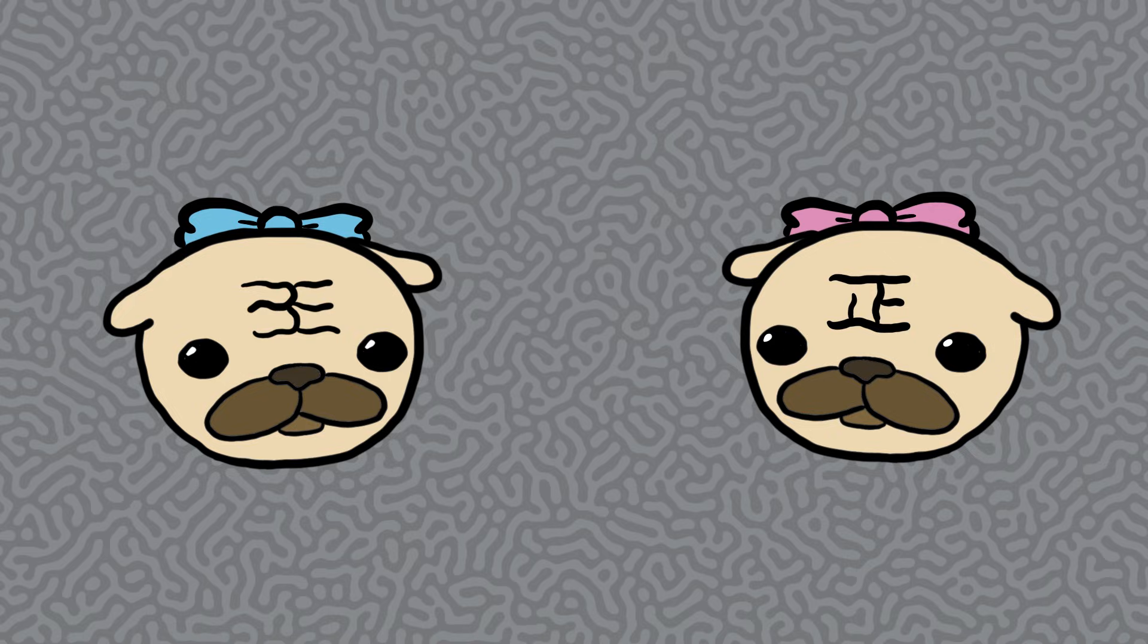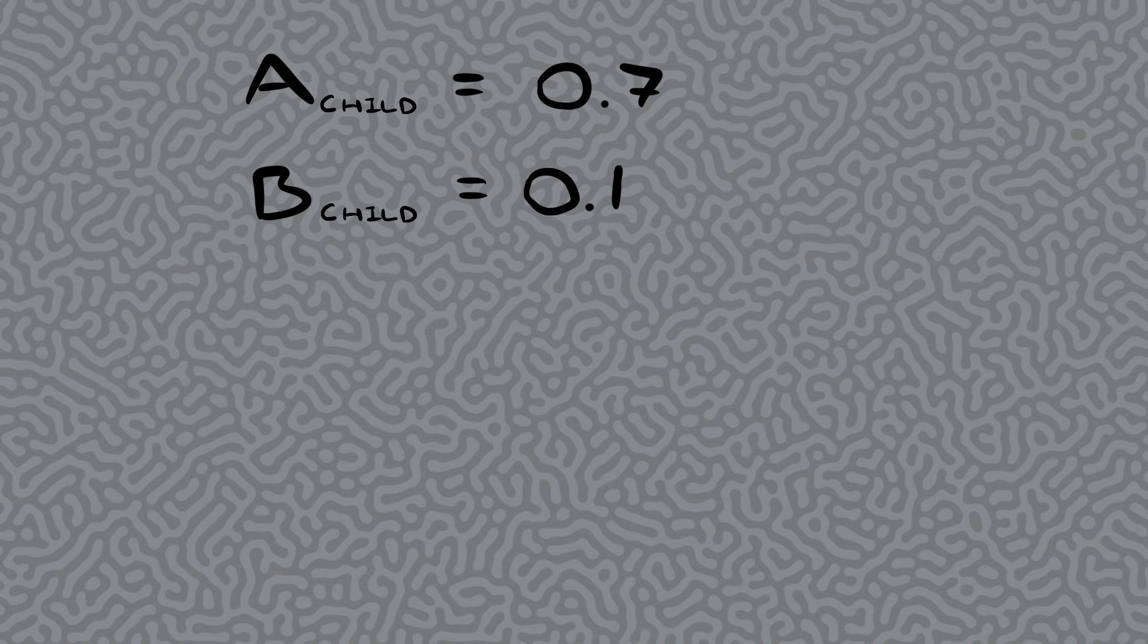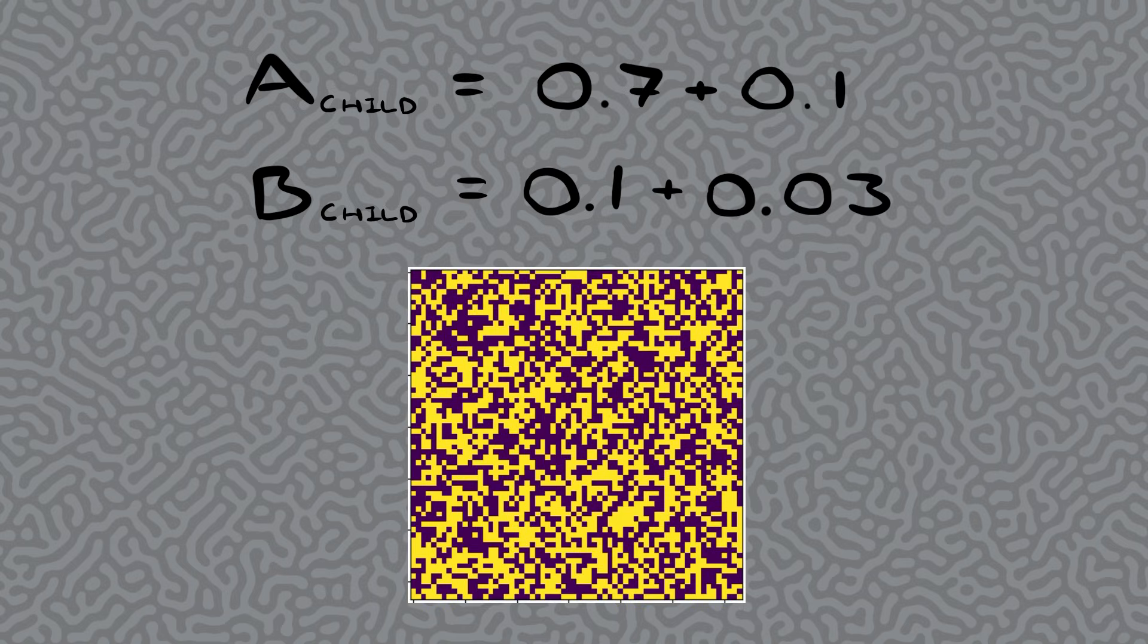Breeding works by picking a random gene from each parent for each trait, then adding a small amount of mutations. For the two parameter genes, the mutation is just adding a random number, and for the initial wrinkle the mutation is swapping some of the pixels at random. Just like in real life, the mutations are necessary for the pugs to have some diversity.